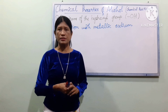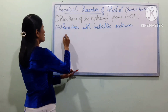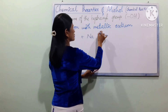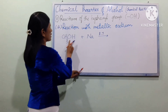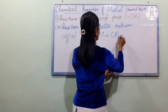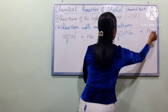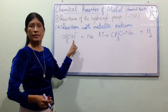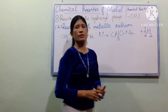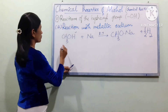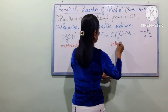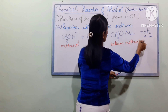The reaction with metallic sodium produces hydrogen gas. The equation is: methanol CH3OH plus Na. The hydroxyl group reacts with sodium, giving sodium methoxide and hydrogen gas (H2).